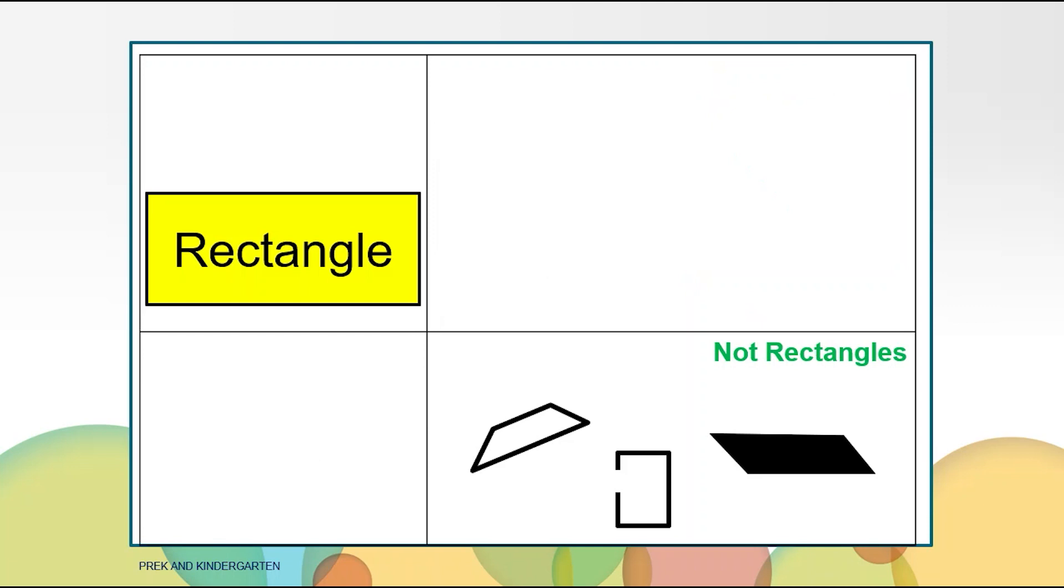These shapes are not rectangles. The first shape does not have square corners and the opposite sides are not the same length. The second shape is not a rectangle because it is not a closed shape. It has a hole in the side. The third shape is not a rectangle because the corners are not square corners.